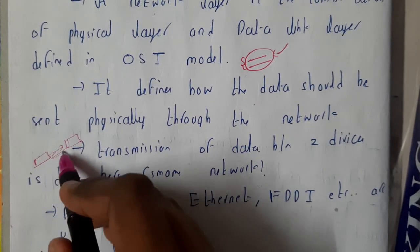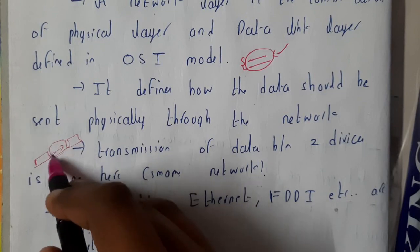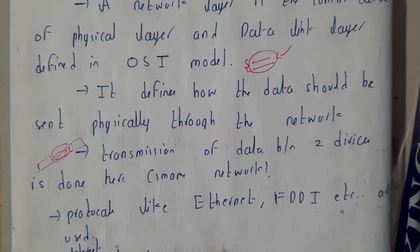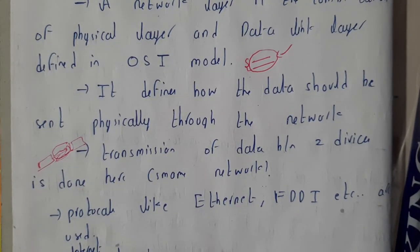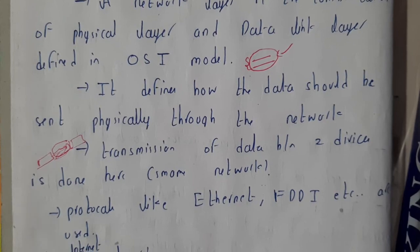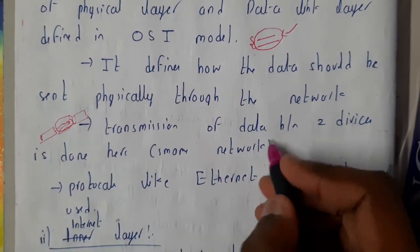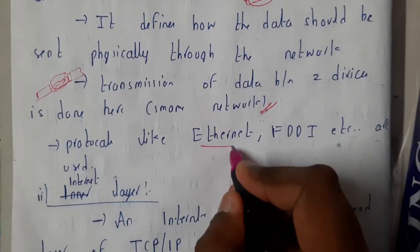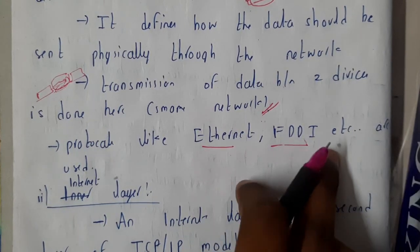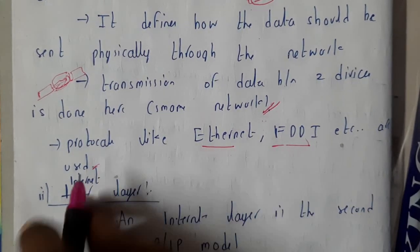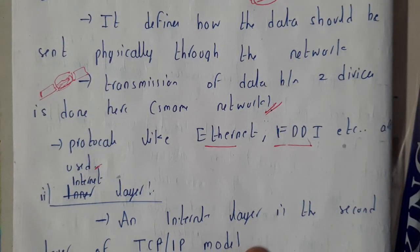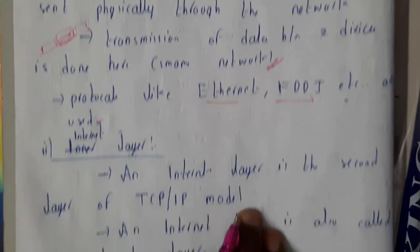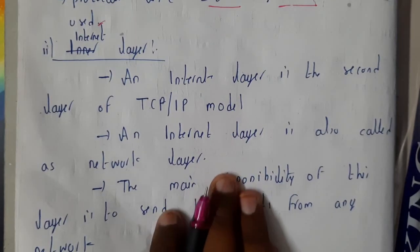The physical layer transmits data between devices through wired connections or radiofrequency and fiber optical waves. Protocols like Ethernet and FDDI are used here. Ethernet is what we use to transfer data using cables between laptops or systems.